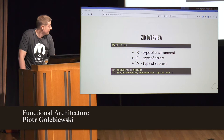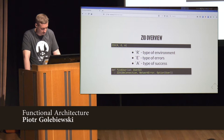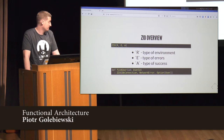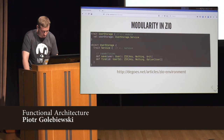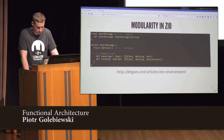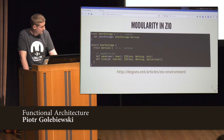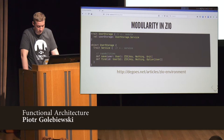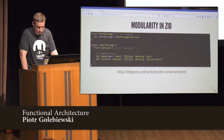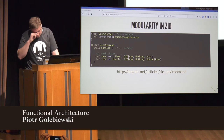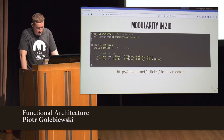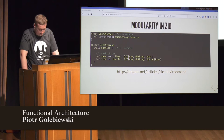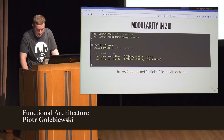So an example program could look like this. The FindUser program requires the database connection to run, it can fail with a network error, and it can return an Option of a User. What you see on this slide is the so-called module pattern as outlined by John in his blog post, linked below. The top trait is called the module. It holds only one value, and by convention it is named after the module, which is a reference to the actual service.